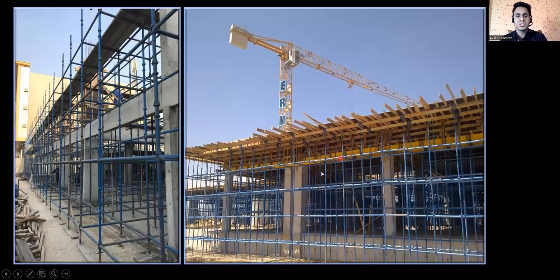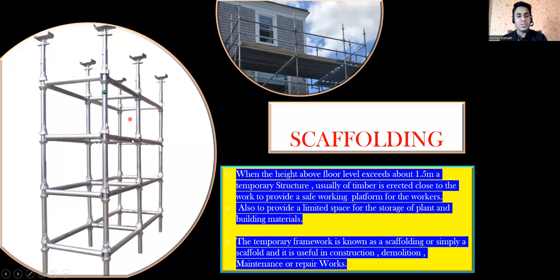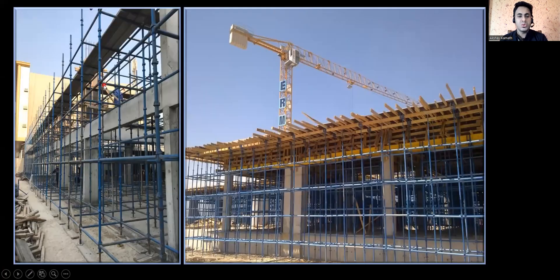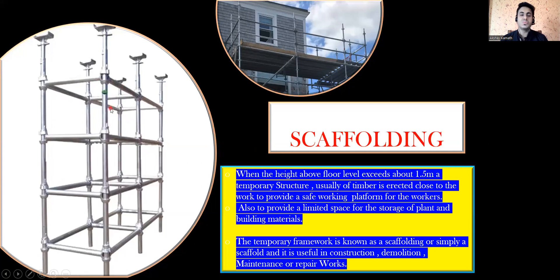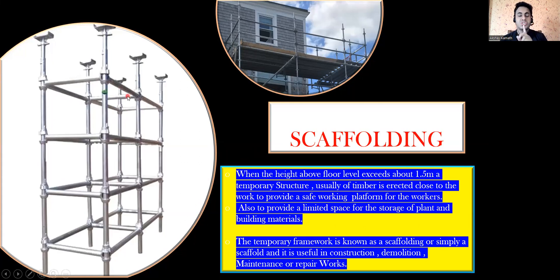Next, what is scaffolding? Scaffolding looks similar — you can see the cup lock system used here as well. The difference is that scaffolding is a temporary arrangement done to help people stand and work, not to support formwork. When the height above floor level exceeds about 1.5 meters, a temporary structure — usually of timber — is erected close to the work to provide a safe working platform for workers and limited storage space for materials. This is known as scaffolding, useful in construction, demolition, maintenance, or repair works.